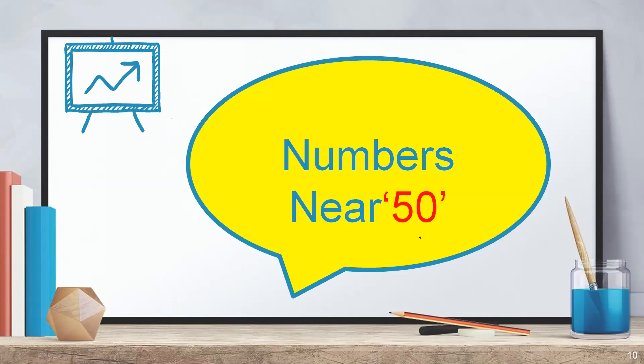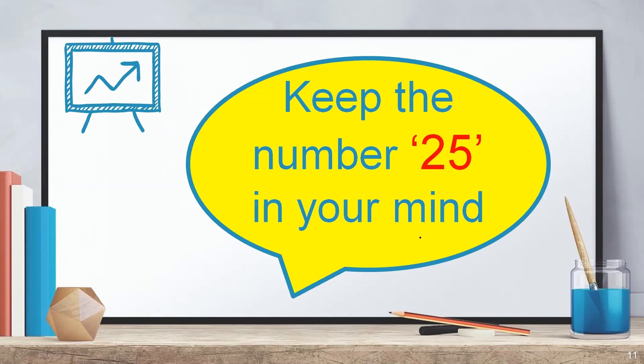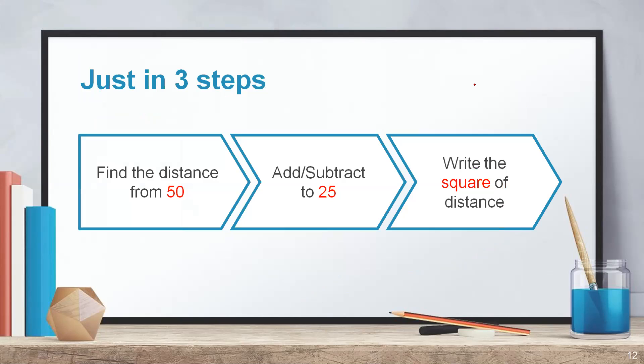Shall we go to the next set of numbers, which are numbers near 50? Which means these are the numbers in 40s or 50s. To find out the square of numbers near 50, there is a method which will take just 3 steps. But before I explain what are those 3 steps, keep one number in your mind. It is 25. All of you feed this number into your brain before we start solving the problems. Now you can solve this in 3 steps.